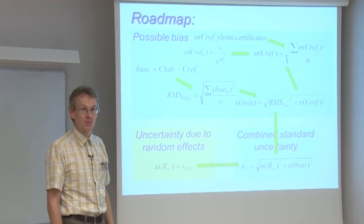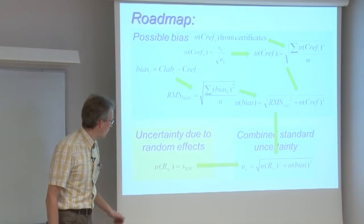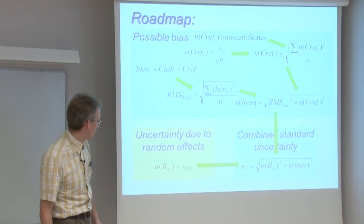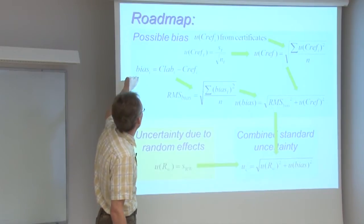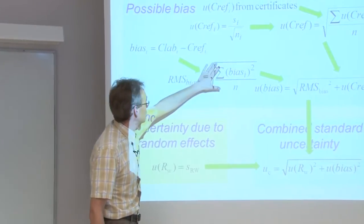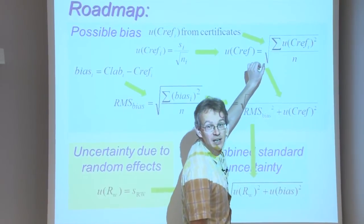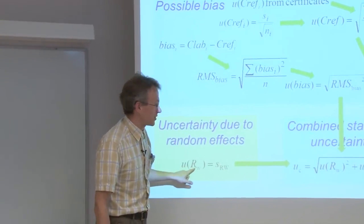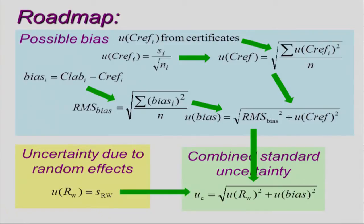Our uncertainty evaluation will proceed according to the roadmap seen earlier. From one of the CRM analyses we get the uncertainty due to random effects — the within-lab long-term reproducibility. From both CRMs we get a bias value, which we then average. Both also have UCref values — uncertainties on the reference values — which we also average and then calculate U_bias. Finally, U_RW and U_bias are combined into the combined standard uncertainty estimate.